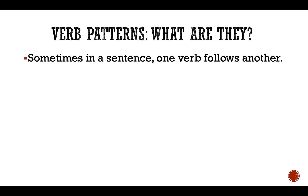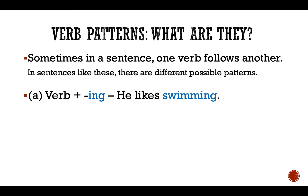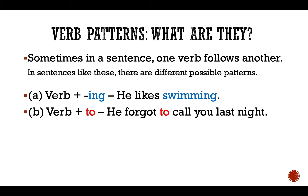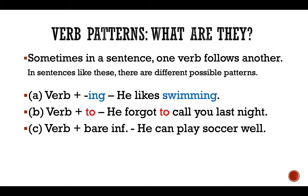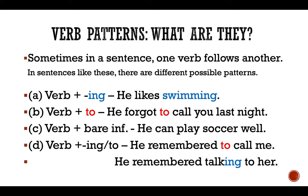So what are verb patterns? Sometimes in a sentence one verb follows another. In sentences like these there are different possible patterns. A: verb plus ING verb — 'He likes swimming,' for example. B: verb plus 'to' verb — 'He forgot to call you last night.' C: verb plus bare infinitive — 'He can play soccer well.' D: verb plus ING verb or 'to' — 'He remembered to call me,' or 'He remembered talking to her.'